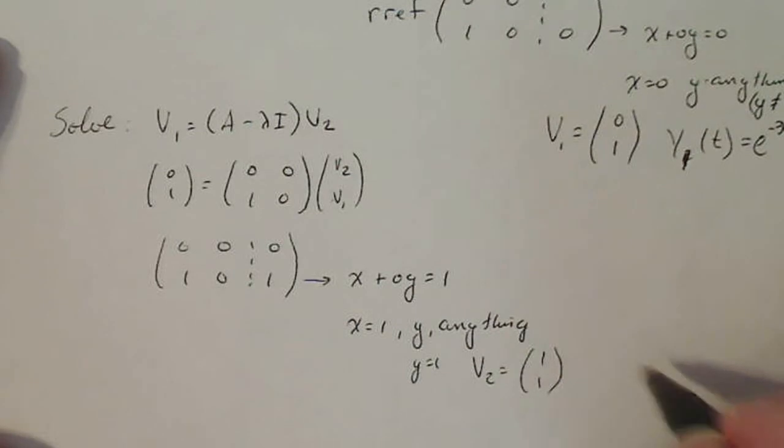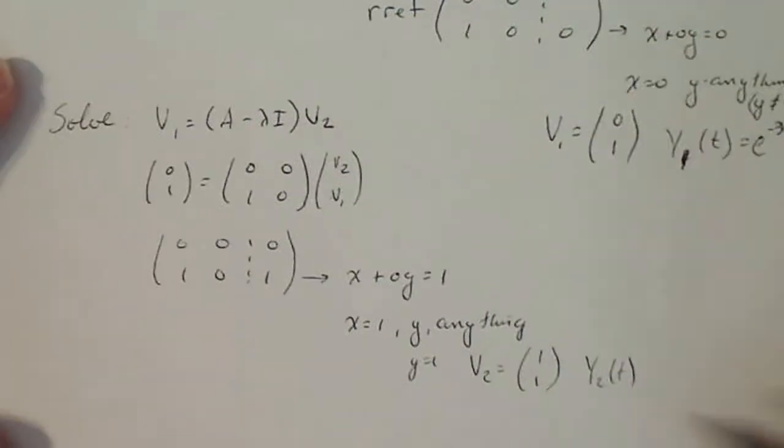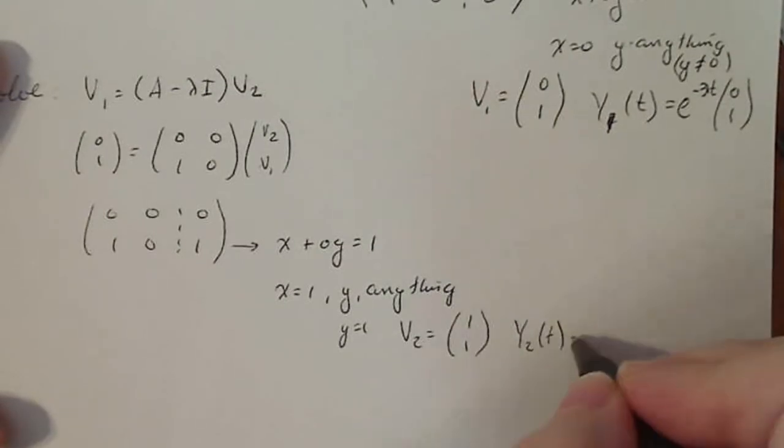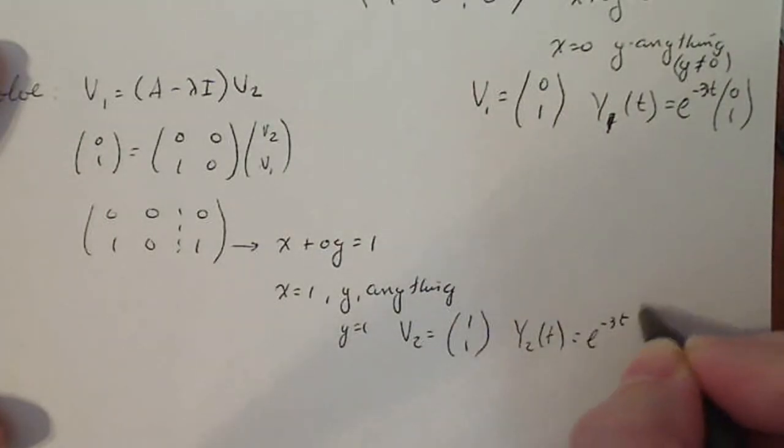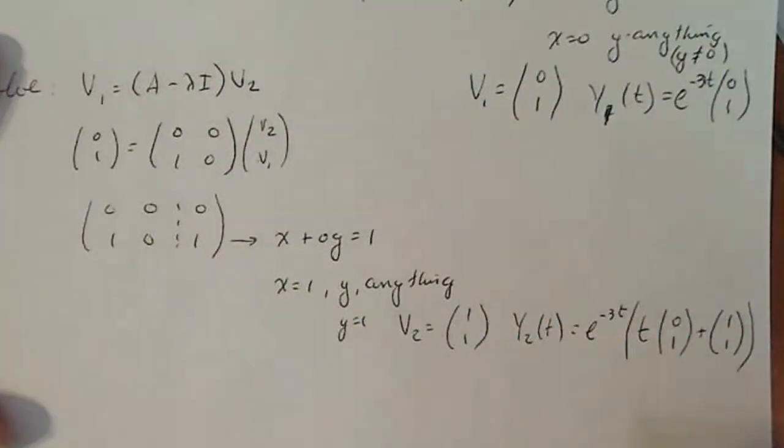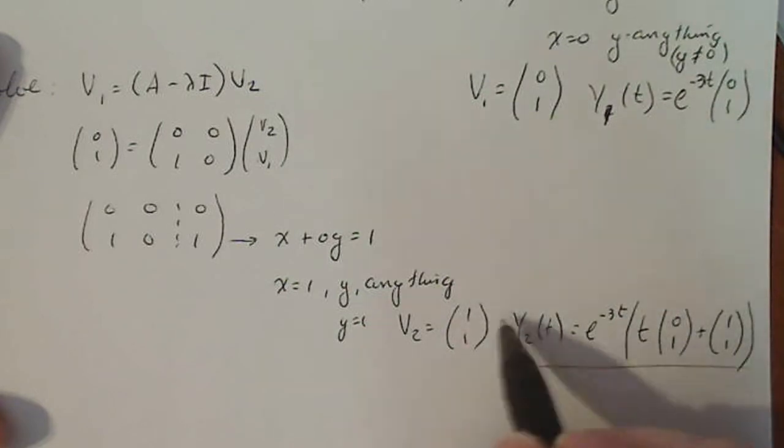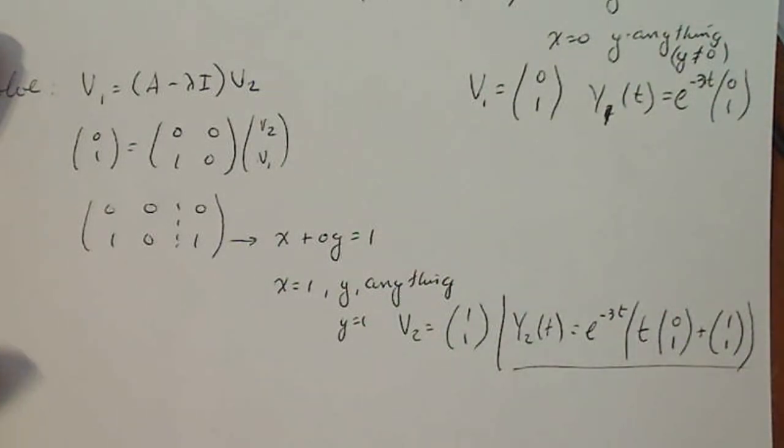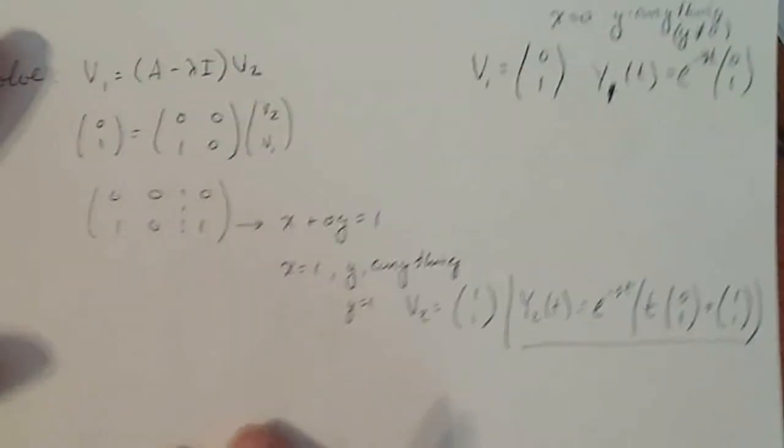So now, my capital Y sub 2, the other part of the linearity principle, turns out to equal e to the minus 3t times t times v1 plus v2. So there, right there, is my second part of the linearity principle that will make up my general solution in the end.